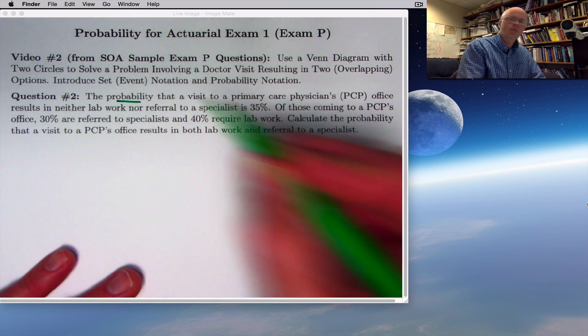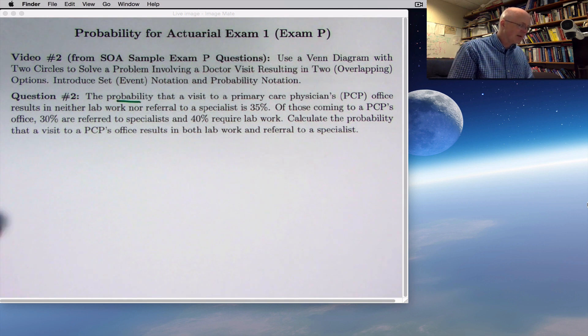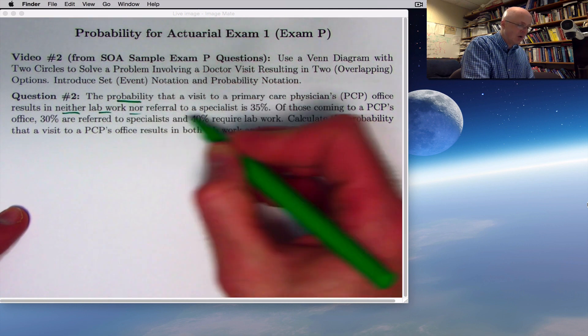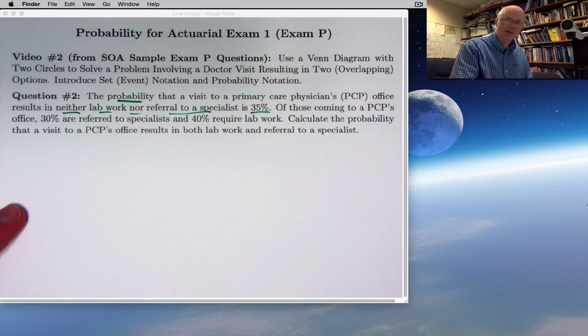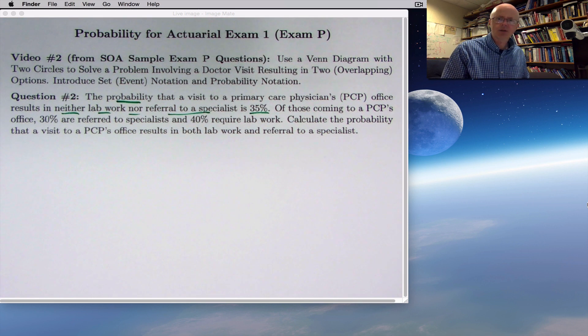The probability. We talked about the meaning of probability in the last video as an assessment of the chances of something happening as you are about to do a random experiment. In this case, picking a person at random who went to this primary care physician's office. The probability that it results in neither lab work nor referral to a specialist is 35%, less than 50% chance. How would that be determined? It would be based on past data.